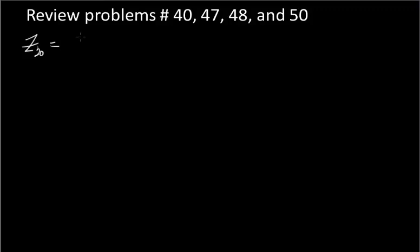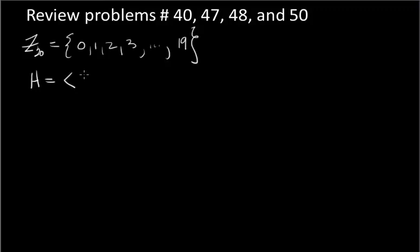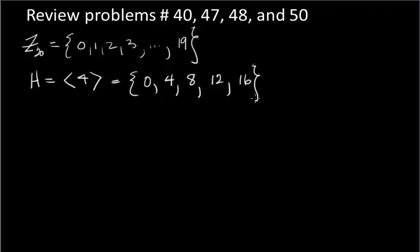We're going to look at problem 40. You could expect something like this on the test where you have to actually show the elements of the factor group. We're working with the group Z20, which is a group under addition modulo 20, with elements 0, 1, 2, 3 up to 19. We take the subgroup H generated by the element 4 under addition: 0, 4, 8, 12, 16, and then 4 plus 4 plus 4 plus 4 plus 4 is 0 mod 20. Since Z20 is abelian, H is a normal subgroup of Z20.